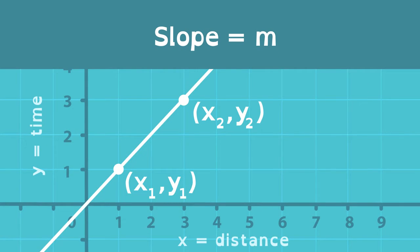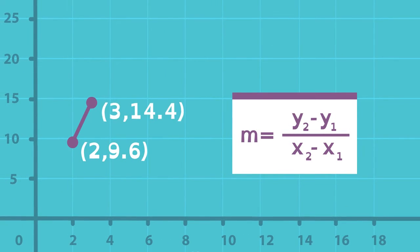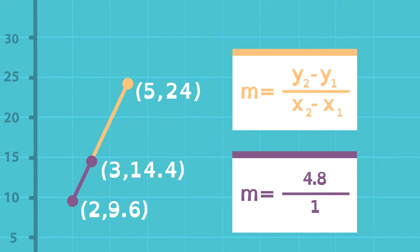Remembering that the slope between two points on a line is change in y over change in x, Jason calculates the slope between two of his data points, and the slope between two other data points.